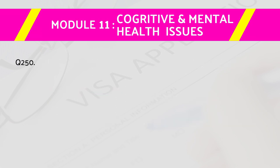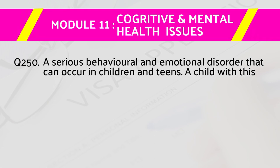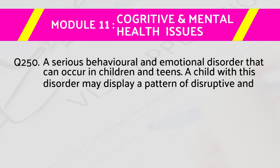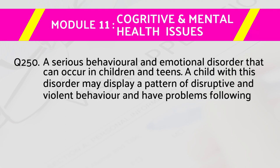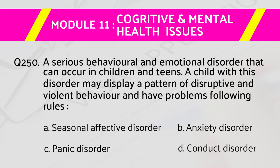Question number 250: A serious behavioral and emotional disorder that can occur in children and teens — a child with this disorder may display a pattern of disruptive and violent behavior and have problems following rules. Answers are: a) seasonal affective disorder, b) anxiety disorder, c) panic disorder, d) conduct disorder. The right answer is d) conduct disorder.